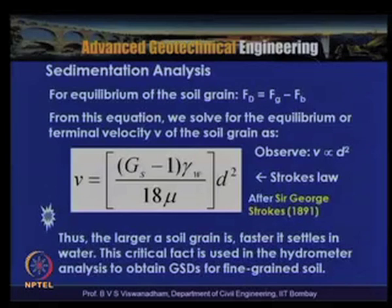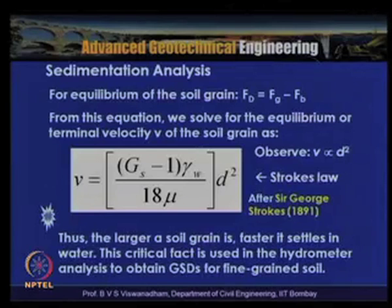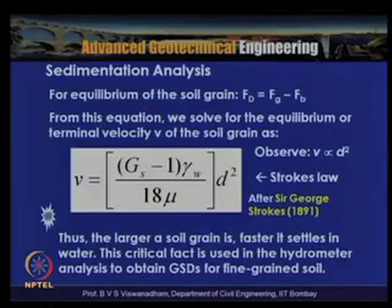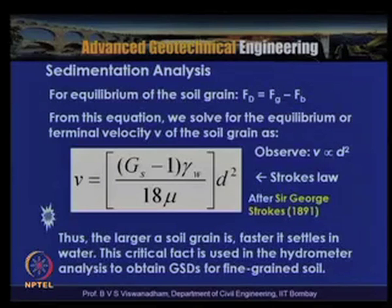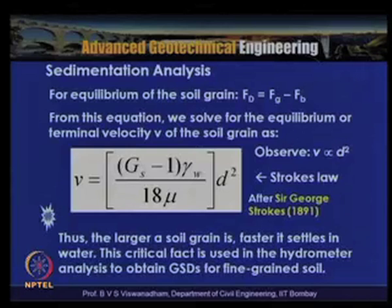Stokes' law indicates that the larger the soil grain, the faster it settles — the terminal velocity v is proportional to d². This critical fact is used in hydrometer analysis to obtain the grain size distribution for fine-grained soils. For finer particles like bentonite the terminal velocity is very low, meaning they take a long time for sedimentation.